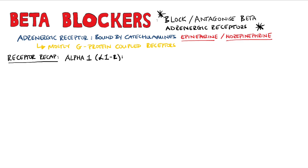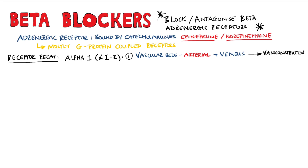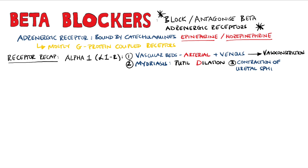Alpha-1 receptors are present in the vascular beds, both arterial and venous. Activation of these receptors leads to vasoconstriction, meaning an increase in mean arterial pressure and increased venous return. Other effects include mydriasis — meaning pupil dilation, remember D for dilation — as well as contraction of the urethral sphincter and the prostate.